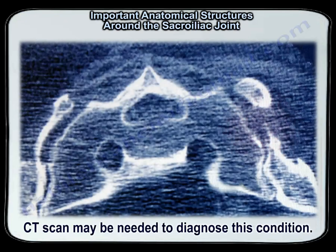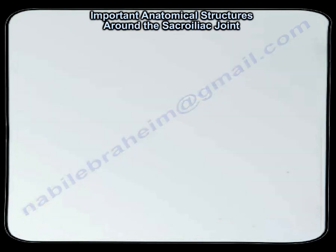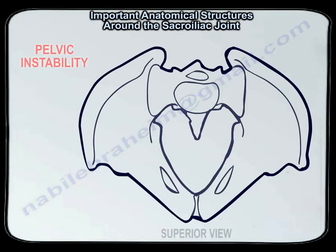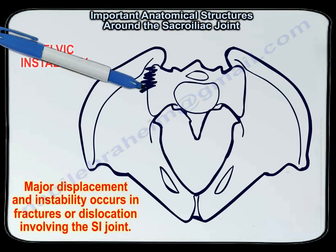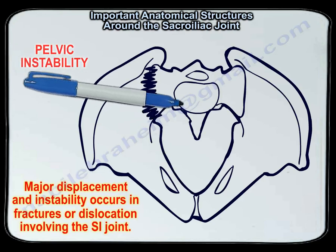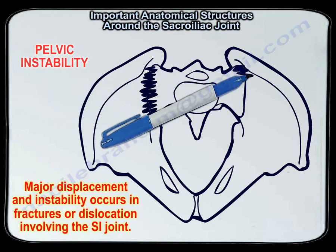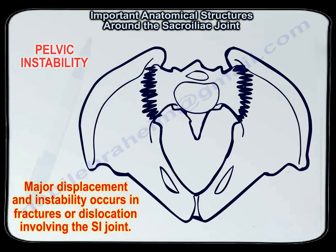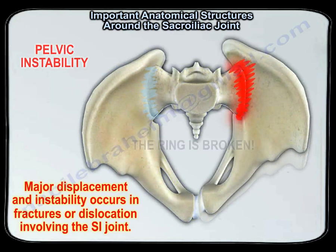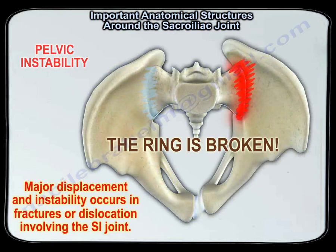A CT scan may be needed to diagnose this condition. The pelvis is a ring, and major displacement and instability occurs in fractures or dislocations involving the sacroiliac joint. The pelvic ring becomes broken and that can create pelvic instability.